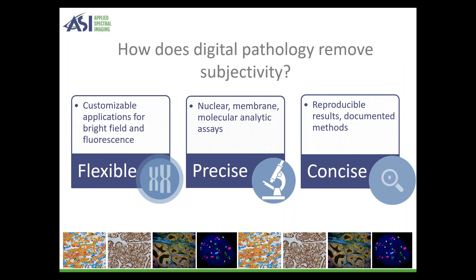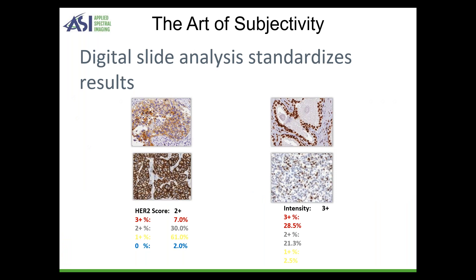So how does digital pathology remove subjectivity? It does it in a couple of areas. It has to have three criteria: being flexible, precise, and concise. You have to have flexible applications for both brightfield and fluorescence. It must be precise — our analytic modules and assays must be reproducible and our methods must be documented. Digital slide analysis standardizes results. It's very well proven that performing a digitized analysis is going to remove all subjectivity for that particular slide, done through a mathematical algorithm applied to that tissue.